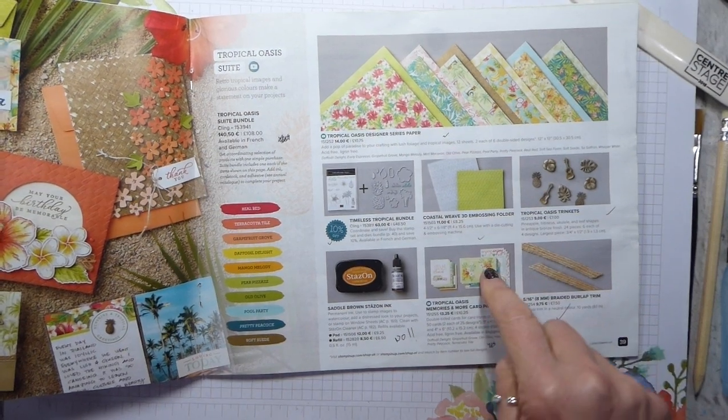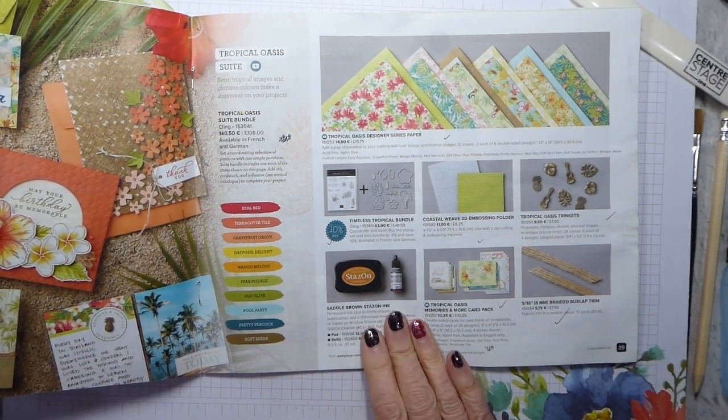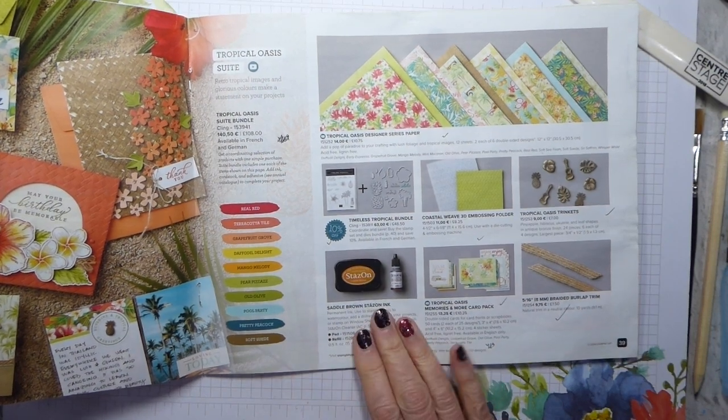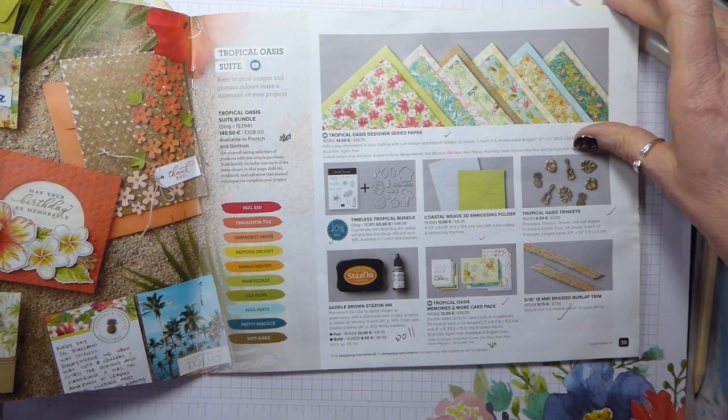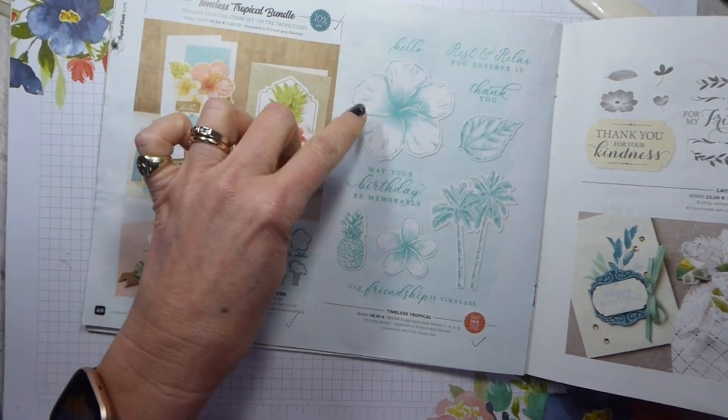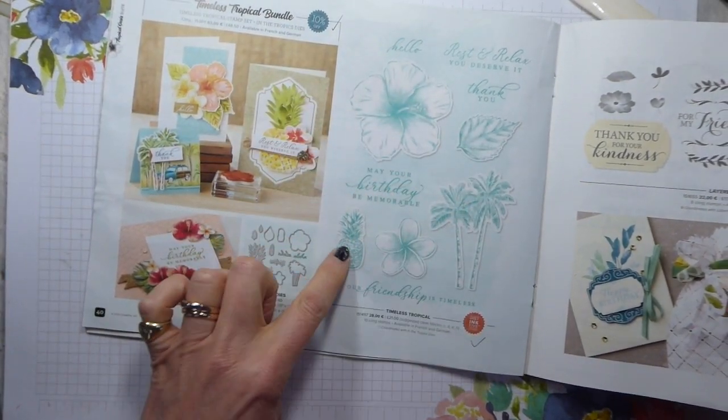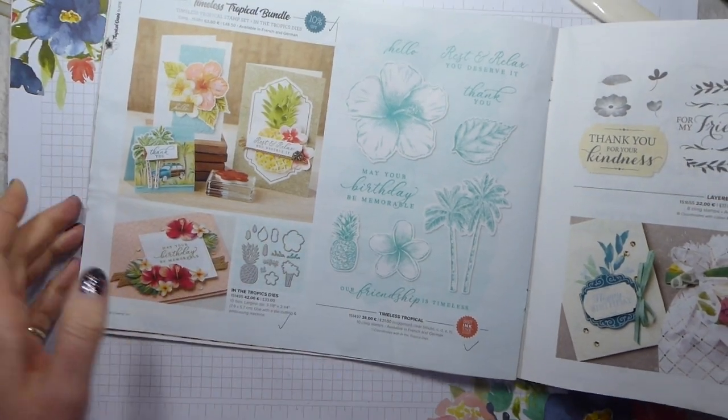Lovely burlap trim. There's Memories and More cards. The Saddle Brown StazOn ink currently is not available in Europe, and I don't think it's available in North America either. Trinkets, which we will be using, and here's the stamp set. And the dies include dies for these items here, plus there is a pineapple and other bits and pieces.